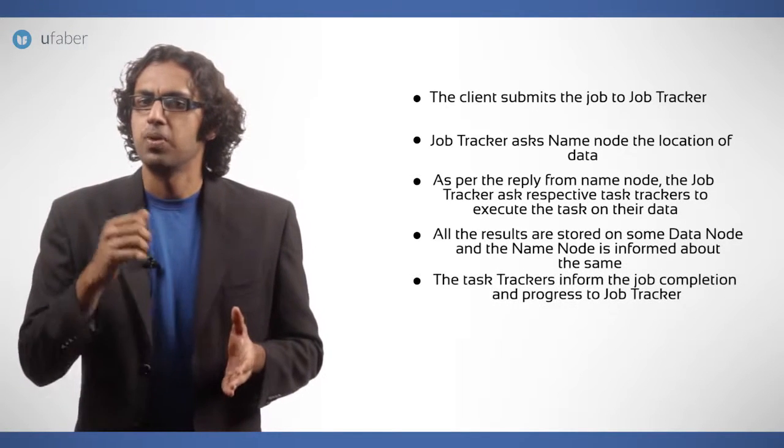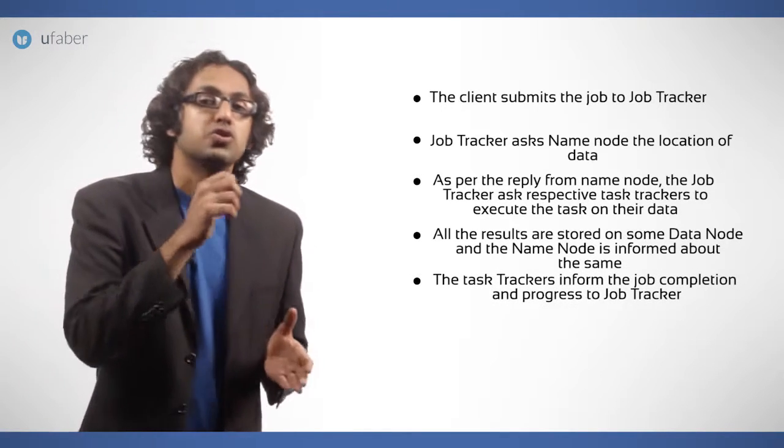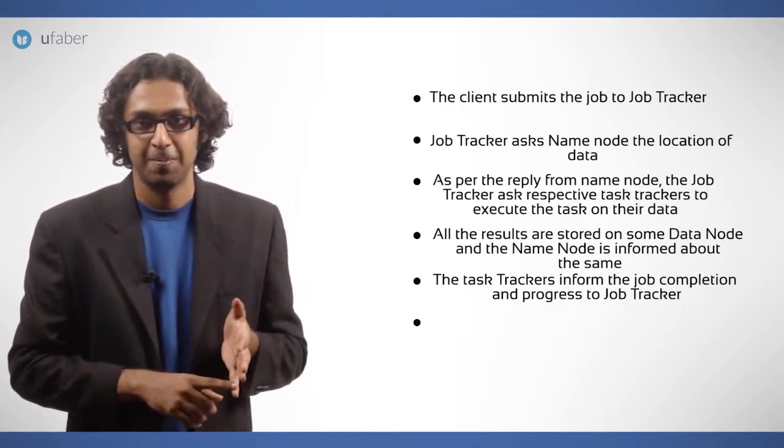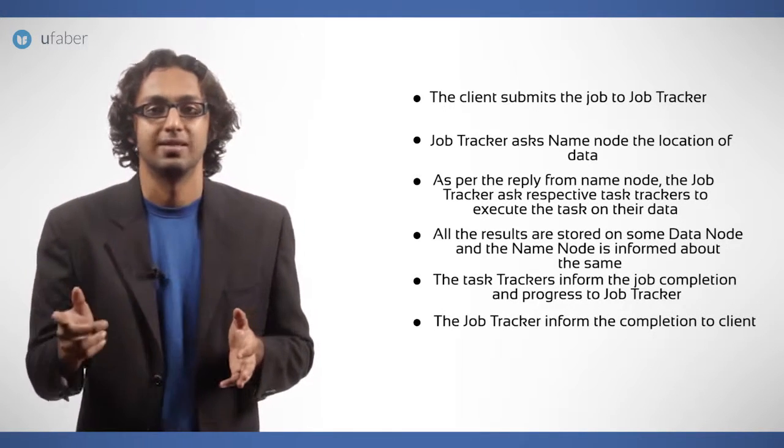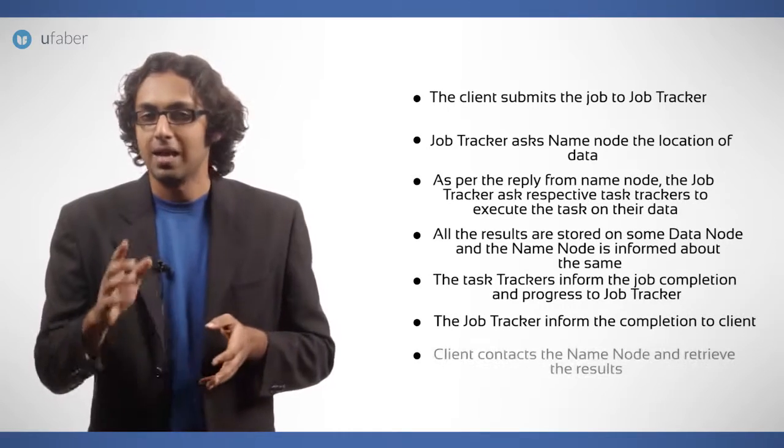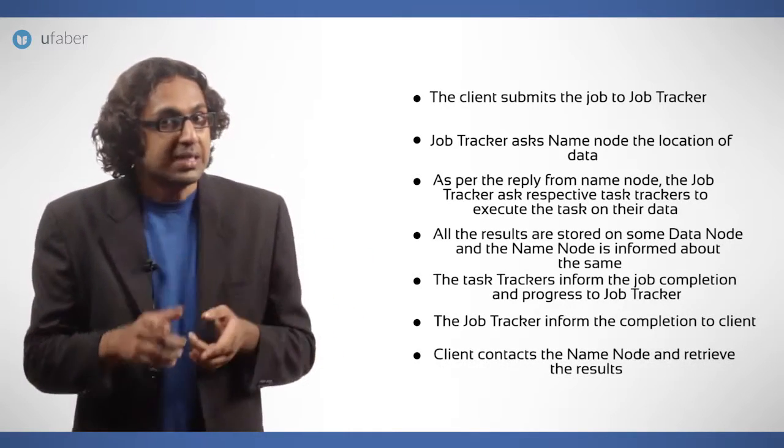the task trackers inform the job completion and progress to job tracker. Number six, the job tracker informs the completion to client. Number seven, client contacts the name node and retrieves the result.